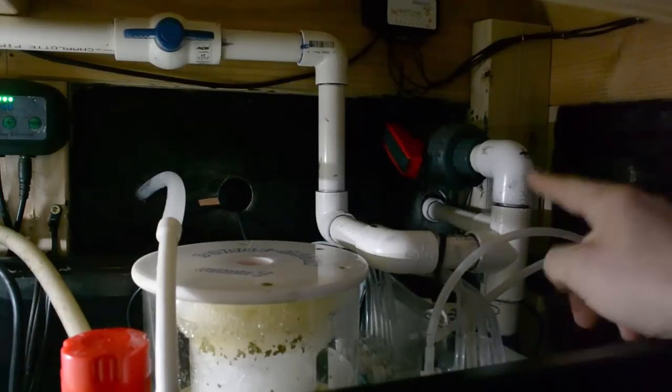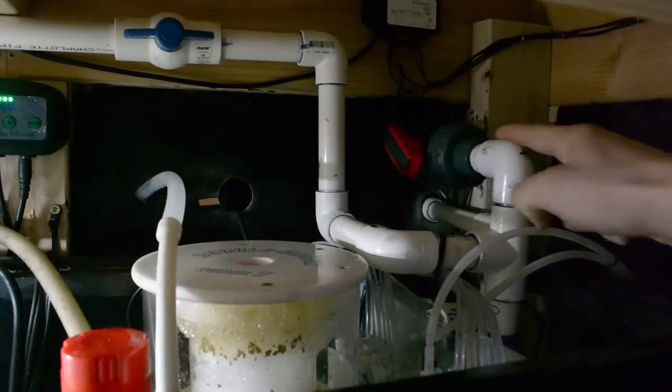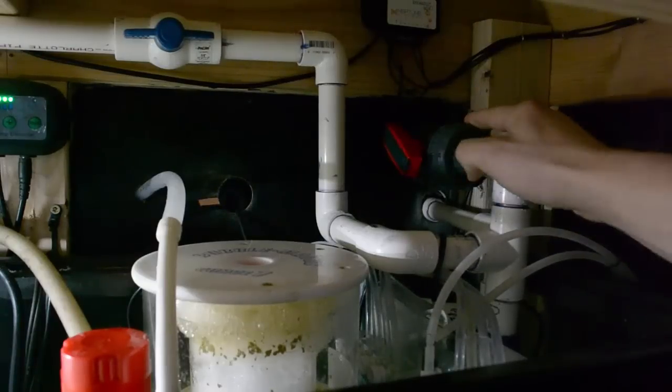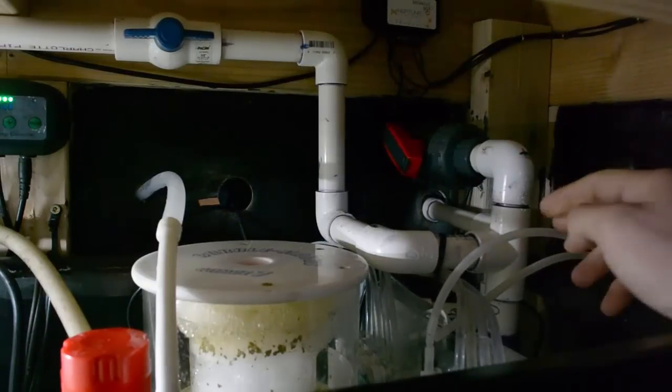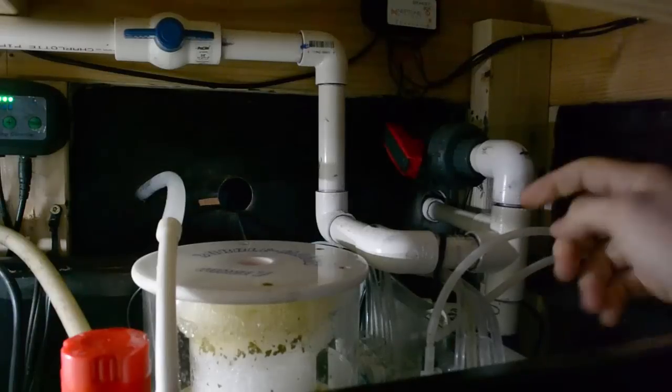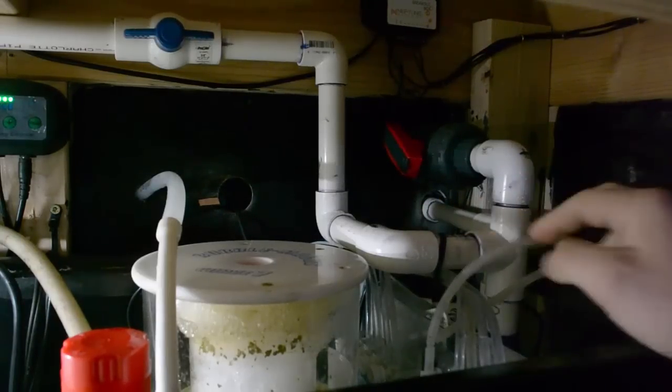I come to a T. This one here goes to the main display. I have a ball valve on here where I can adjust the flow rate. It basically adds back pressure on the pump which allows me to put more through the manifold. So that's what that is.